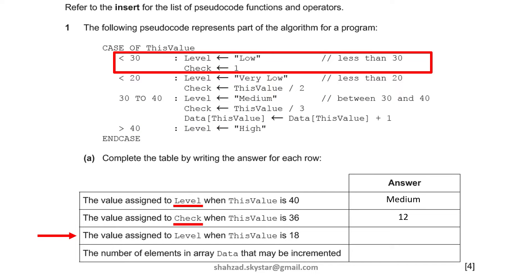Next: the value assigned to level when this value is 18. With 18, it will check the first condition — 18 is less than 30. Yes, obviously 18 is less than 30. So what happens? When this value is 18, what will level get? Level will get 'low'.